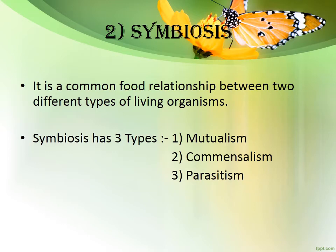The second type of food relationship is symbiosis. Symbiosis is a common food relationship between two different types of living organisms. Symbiosis has three types: mutualism, commensalism, and parasitism.